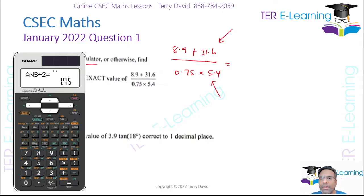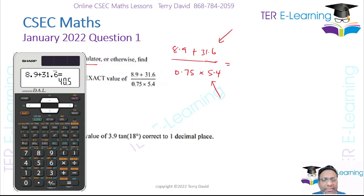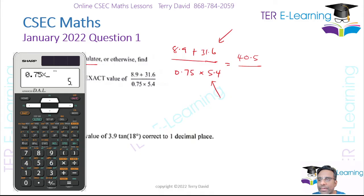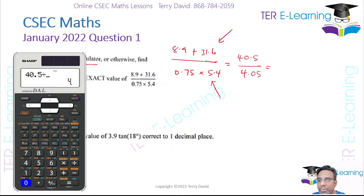Make sure you have your calculator. I want to work out 8.9 plus 31.6, and I'm going to get 40.5. Then we need to work out 0.75 multiplied by 5.4, and that gives me 4.05. So all we're going to do now is divide those two numbers: 40.5 divided by 4.05, and you're going to get 10 as your answer.